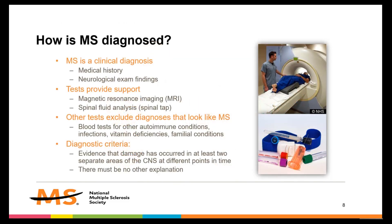There is no single test that can determine if a person has MS. A healthcare provider, typically a neurologist, will assess medical history and perform a neurological exam. Other tests are done to provide support and to rule out other possible causes of the person's symptoms. The process for diagnosing MS is one of exclusion, where other possible causes are eliminated. The current criteria for the diagnosis of MS requires evidence of damage that occurred in different places in the CNS at different points in time. There must also be no other explanation for the symptoms that are occurring, such as infections or vitamin deficiencies.